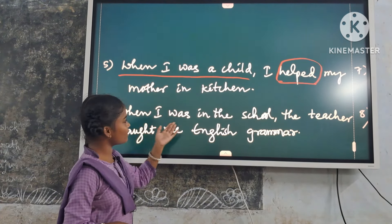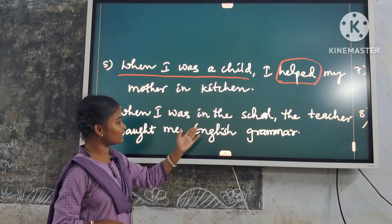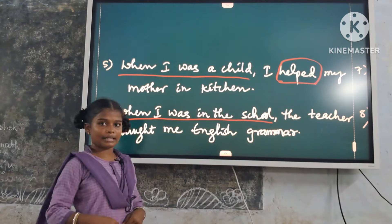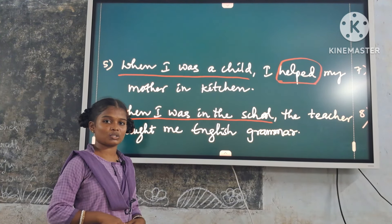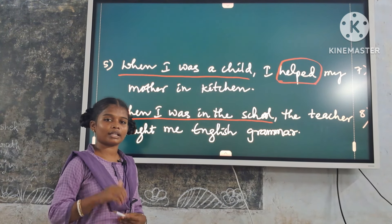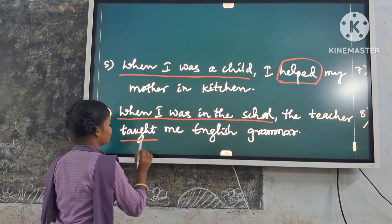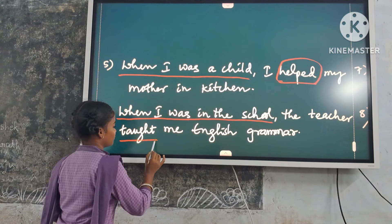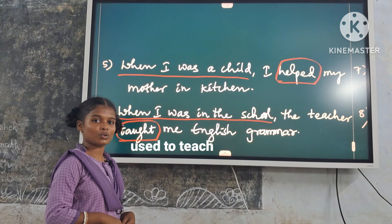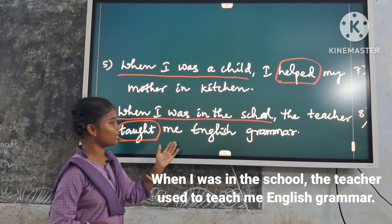Sixth example: 'When I was in the school, the teacher taught me English grammar.' Here, 'when I was in the school' is a time expression. It shows a continued past situation, but not a habit. So we use only 'used to'. Replace it with 'used to teach'. Answer: 'When I was in the school, the teacher used to teach me English grammar.'